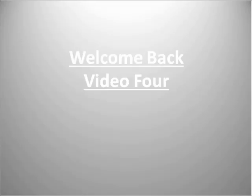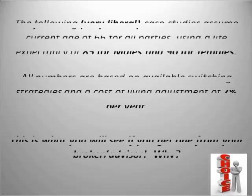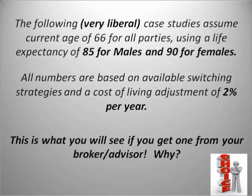Welcome back to video 4 in the Social Security series. We're going to look at some case studies. The following are very liberal case studies that assume a current age of 66 for all parties, a life expectancy of 85 for males and 90 for females, with all numbers based on any kind of switching strategy and a cost of living adjustment of 2% per year.